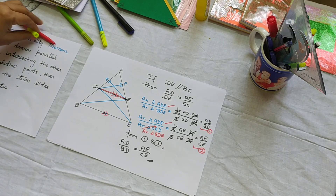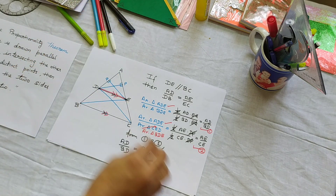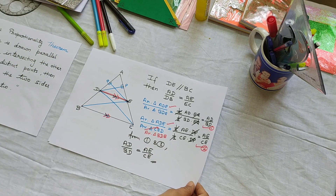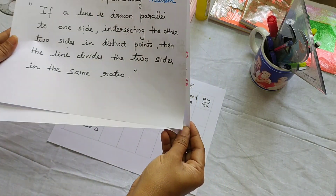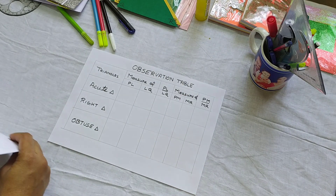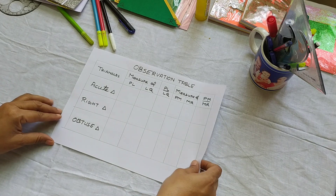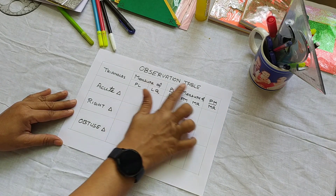Now we will verify the theorem using the paper cutting activity. This was the theorem statement and the proof; I will keep this aside and we will do the paper cutting and pasting activity. For the verification I have drawn an observation table, and we will consider three types of triangles.